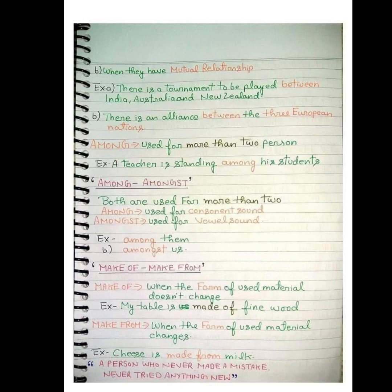The principal distributed the prizes amongst us — 'us' starts with a vowel sound, so we use 'amongst.' Now, 'made of' versus 'made from': use 'made of' when the form of the material doesn't change. My table is made of fine wood — the wood remains wood. Use 'made from' when the form changes. Cheese is made from milk — the milk transforms and is no longer in its original form. Curd is also made from milk.